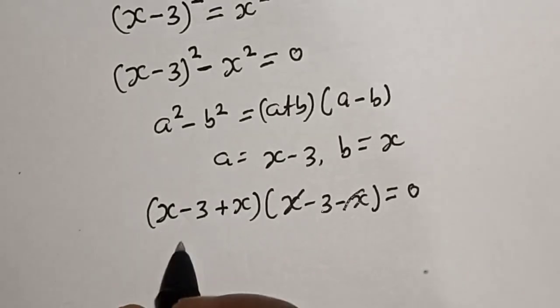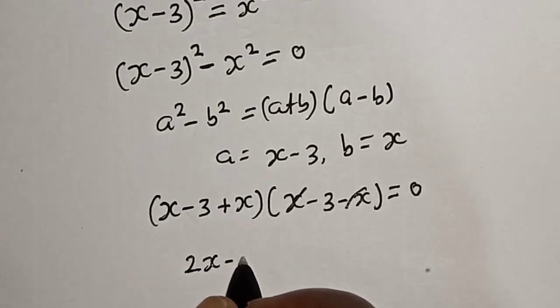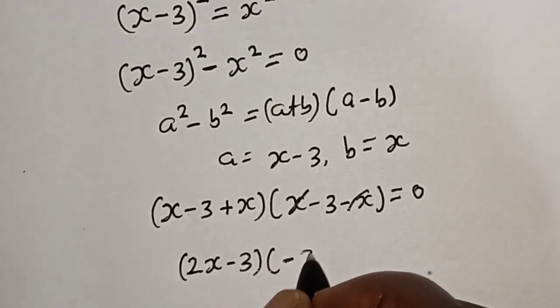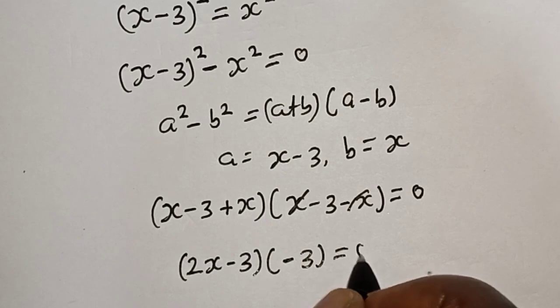We have x plus x, this is 2x minus 3, multiplied by minus 3 is equal to zero.